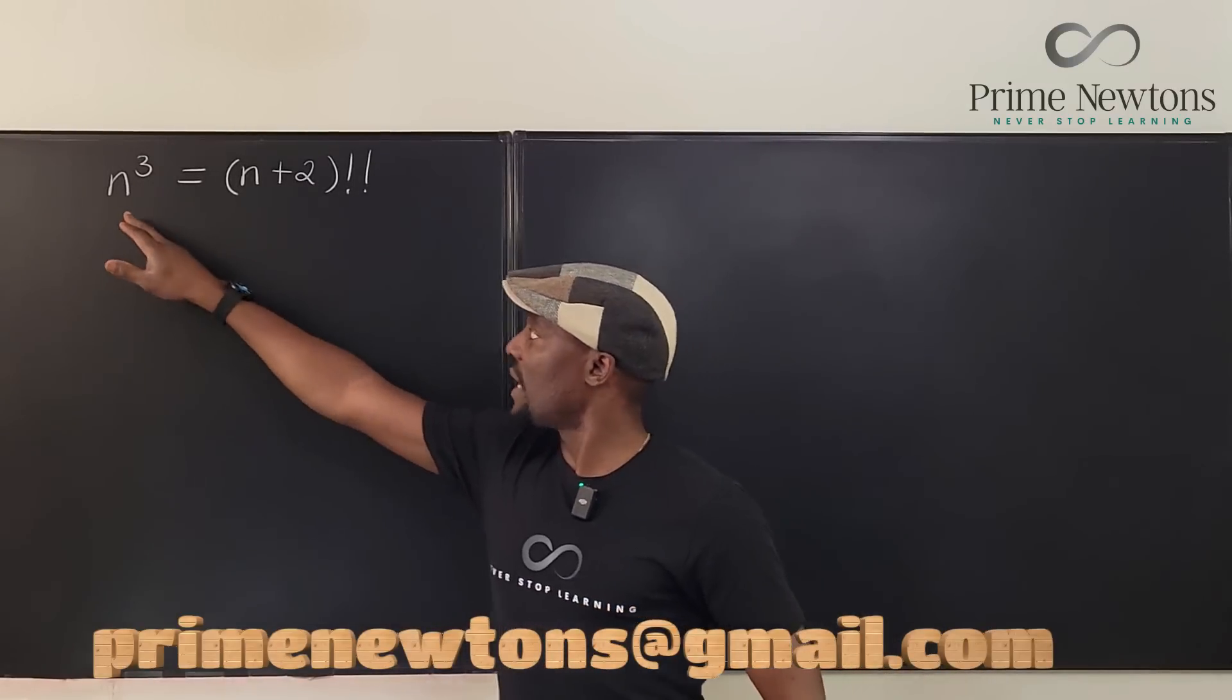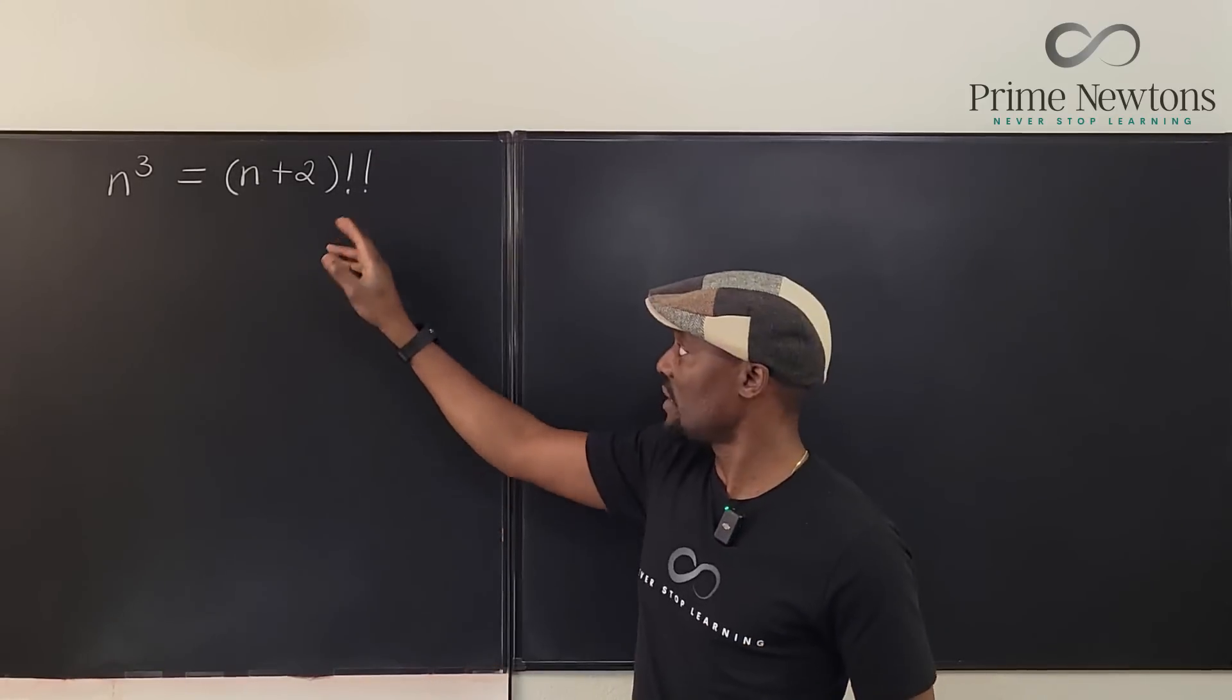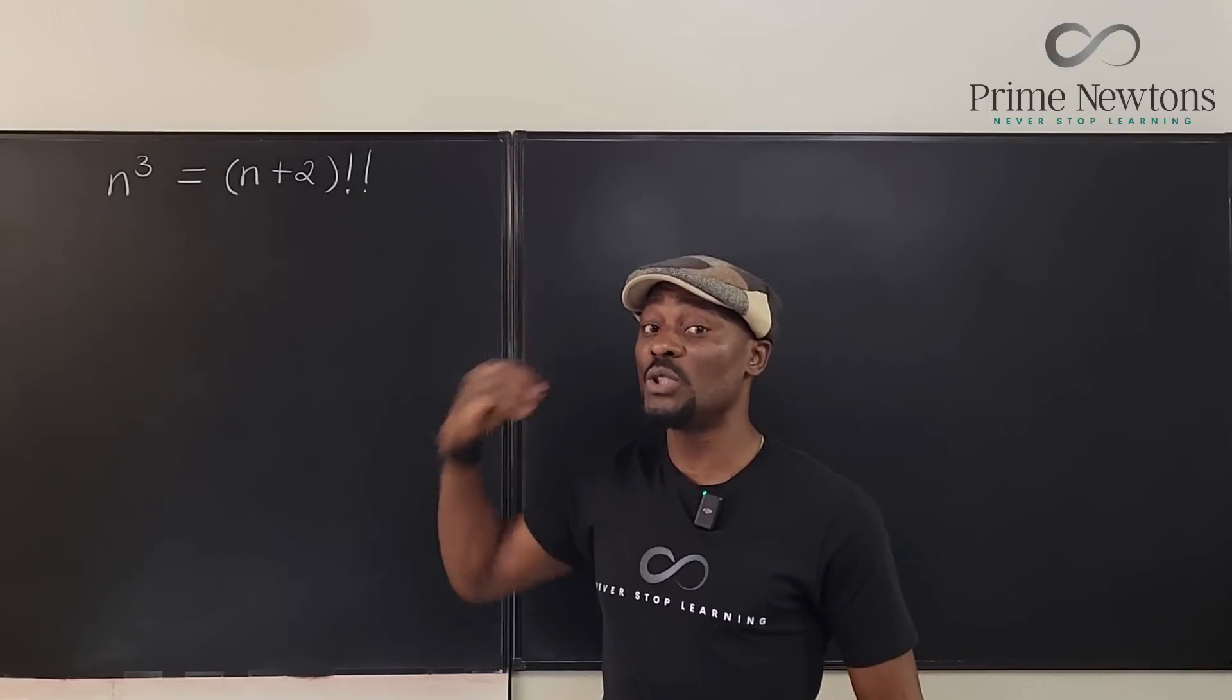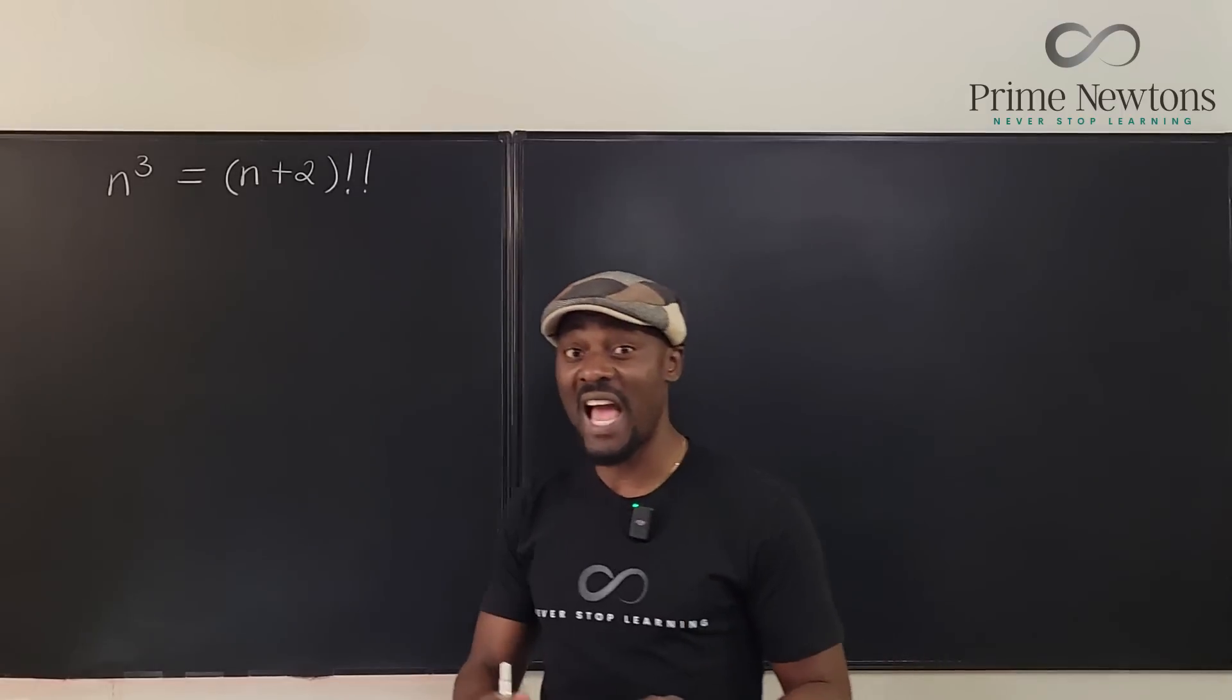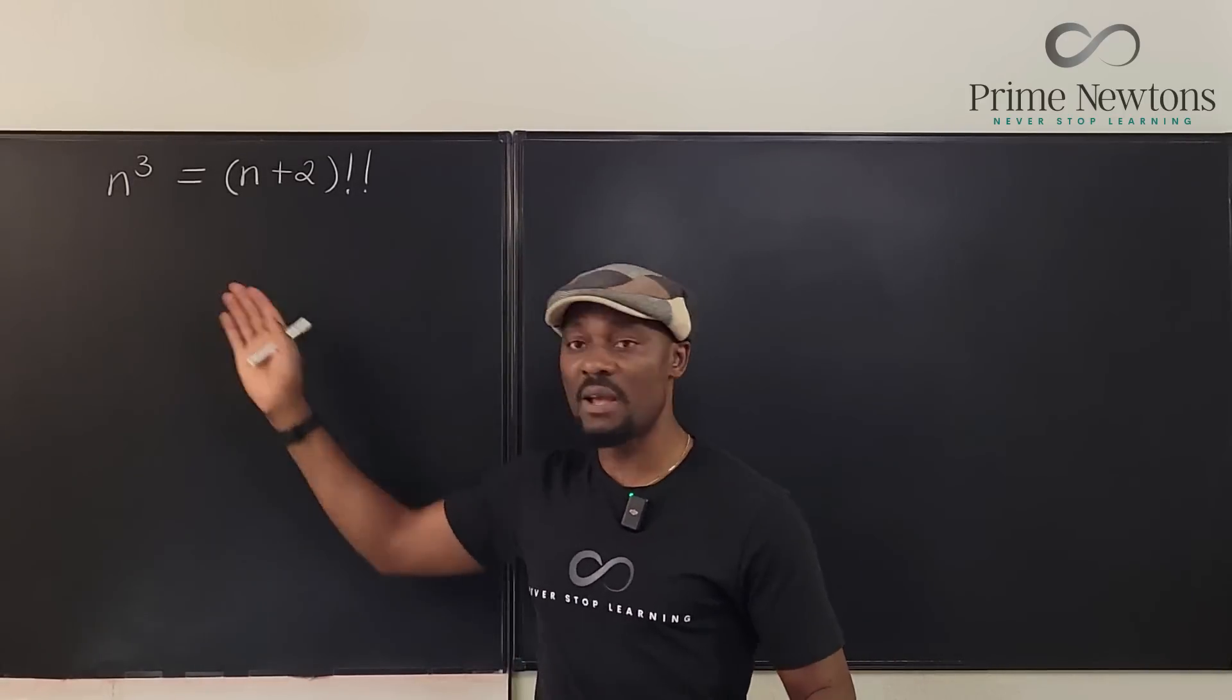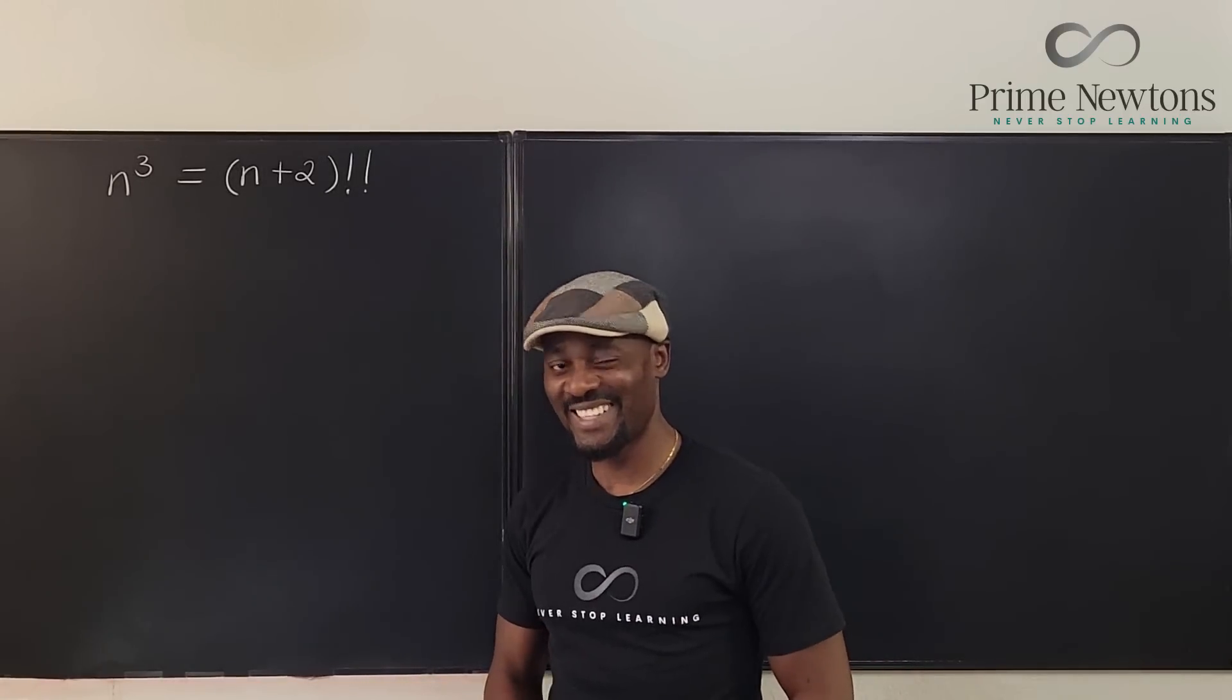Here we want to find the value of n. By the way, n has to be a natural number because we're dealing with factorials in this case. So you have n cubed equals n plus 2. Now this is not factorial factorial. This is actually what you call double factorial. Now a double factorial is not the same thing as the regular factorial. And if you're able to distinguish between a regular factorial and a double factorial, you'll be able to answer this by just simple inspection. Let's get into the video.